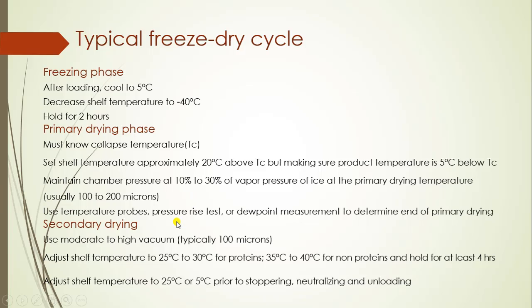Use temperature probes, pressure rise tests, and dew point measurements to determine the end of primary drying. For secondary drying, use moderate to high vacuum. Adjust the shelf temperature to 25 to 30 degrees Celsius for proteins and 35 to 40 degrees Celsius for non-proteins, and hold it for at least 4 hours. Then adjust the shelf temperature to 25 degrees Celsius or 5 degrees Celsius prior to stoppering, venting, and unloading.